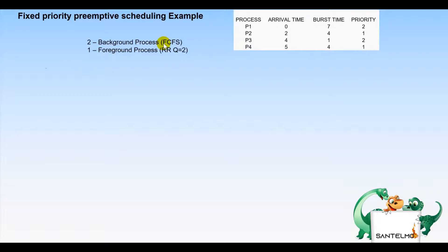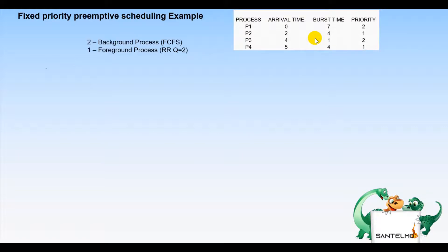We have four processes: P1, P2, P3, and P4 with arrival times of 0, 2, 4, and 5 respectively, and burst times of 7, 4, 1, and 4. Processes P1 and P3 are background processes using first come first serve, while P2 and P4 are foreground processes.